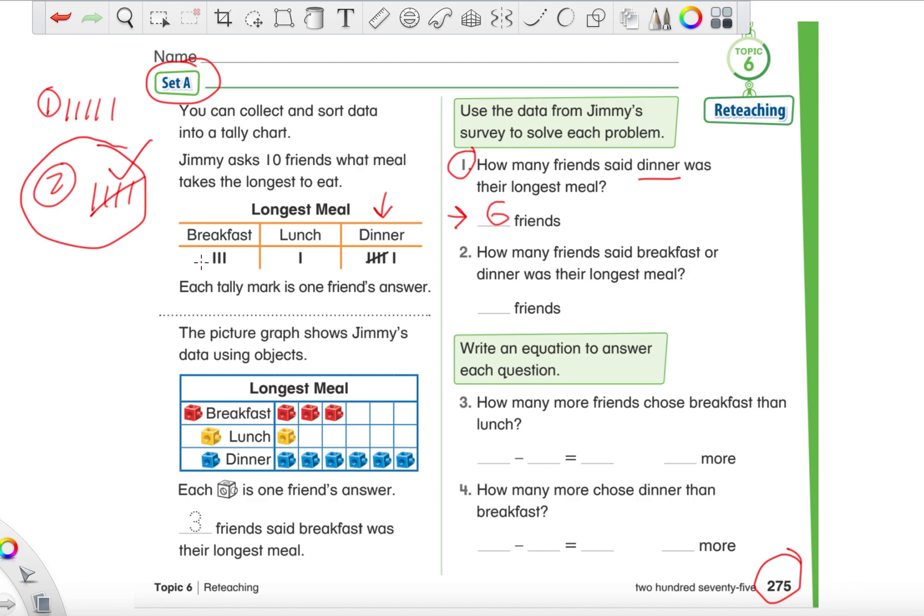So 6 friends said that dinner was the longest. Now, if you went ahead before we even read that and counted each set of tally marks and wrote the numbers down, you would have just been able to look over and go, oh it's 6, and then just wrote it down. But that's only if you chose to do that. If not, it's not a big deal.